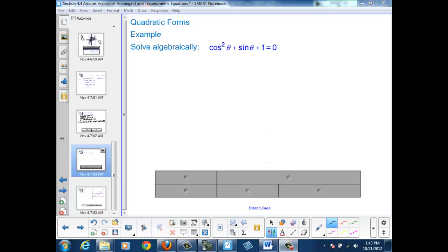The issue here is that I have two trig functions, cosine and sine. So when I ultimately solve for theta, I'd have to apply both an arc cosine and an arc sine. So we need to get around that issue first.